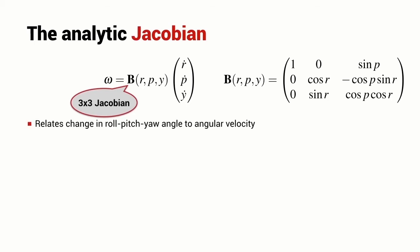This is a nice relationship because it links a very obscure and abstract quantity like angular velocity and expresses it in terms of roll, pitch, and yaw rates, which are much more intuitive for engineers.